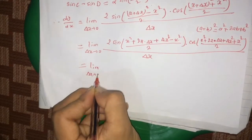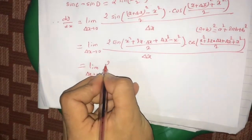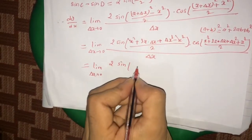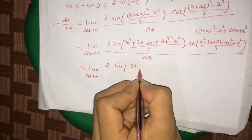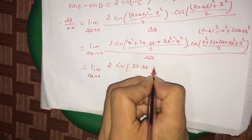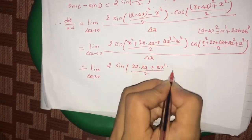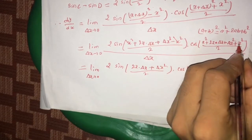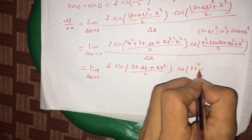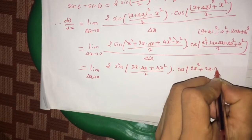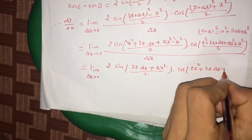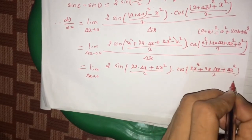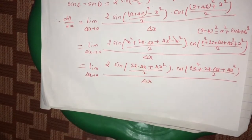Further simplifying: the x² terms cancel inside the sin argument, leaving [2x·Δx + Δx²] / 2. Inside the cos argument, x² + x² gives 2x², so we have [2x² + 2x·Δx + Δx²] / 2, all divided by Δx.